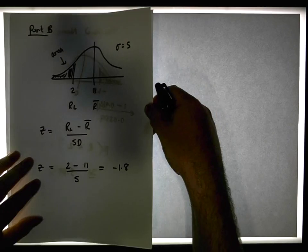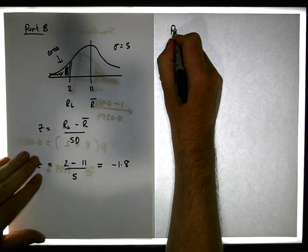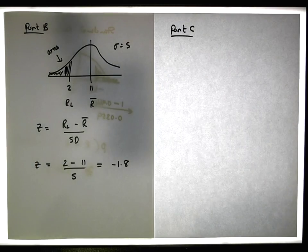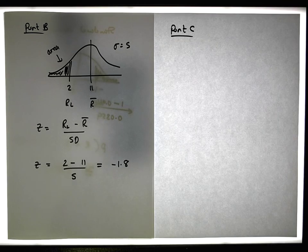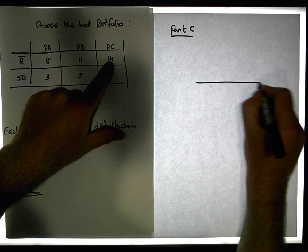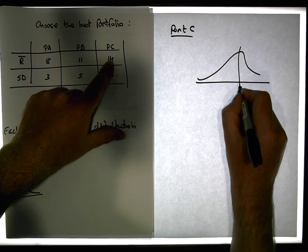And then our final portfolio, which is portfolio C. So when we have a look at portfolio C, we do the same thing. Its return, its expected return, is 14%.